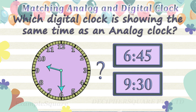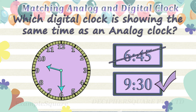Which digital clock is showing the same time as an analog clock? Time in analog clock is 9:30.